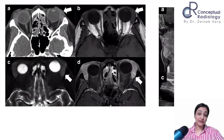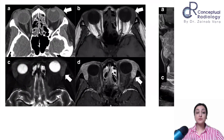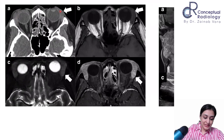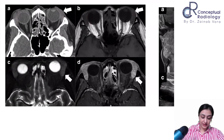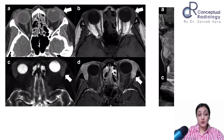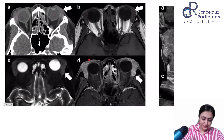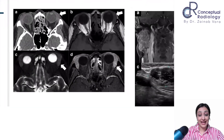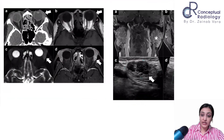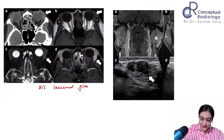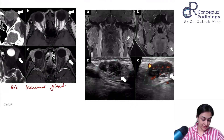First case: this is what was previously called Mikulicz's disease. Bilaterally, you can see how the lacrimal glands are bulky — bilateral dacryoadenitis — with avid enhancement. This is bilateral lacrimal gland swelling.